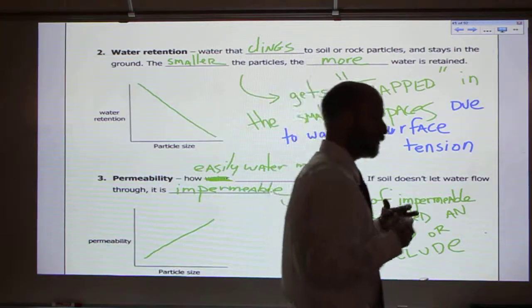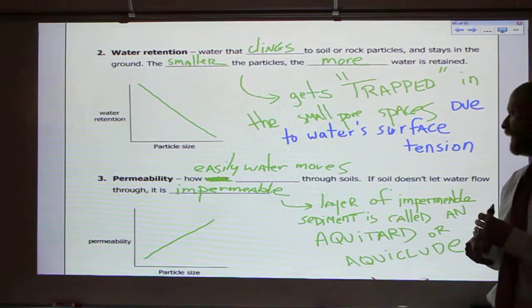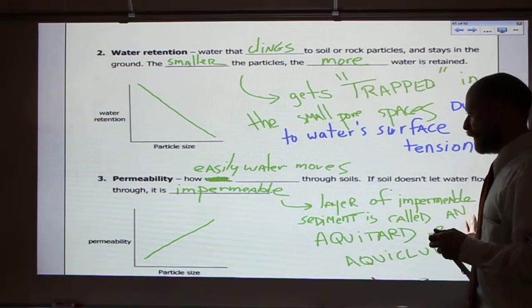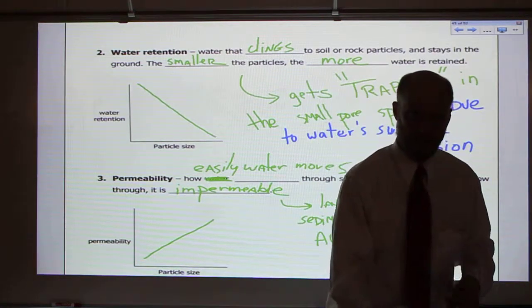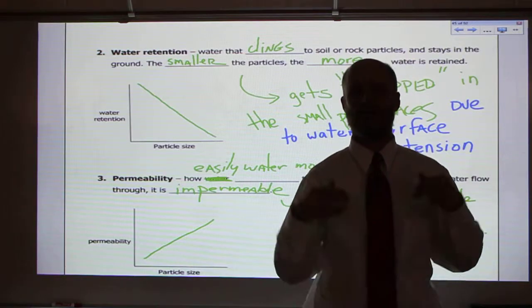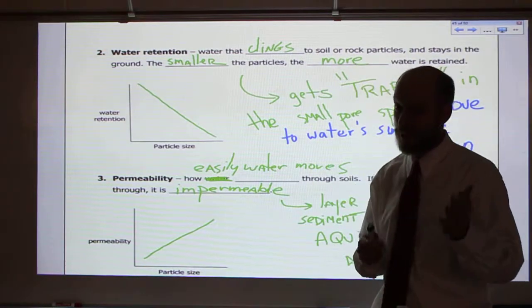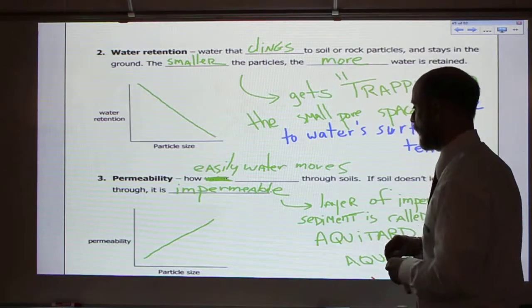Permeability is how easily water moves through soils or sediment. If the soil doesn't let water move through, it's impermeable. So like this desktop here, it's impermeable. I spill water on there, it'll sit there. It's not going to go through it. It's impermeable. You want that in a desktop or a counter or something like that.